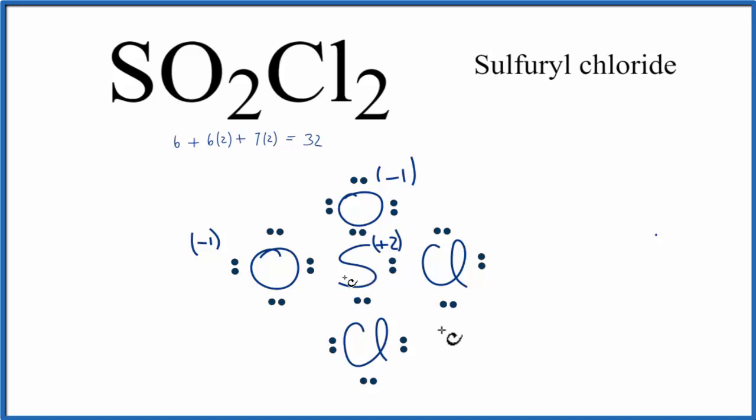So our formal charges, we like them to be as close to zero as possible. That means that the Lewis structure will be more favorable or more likely. So we can do something to fix that.